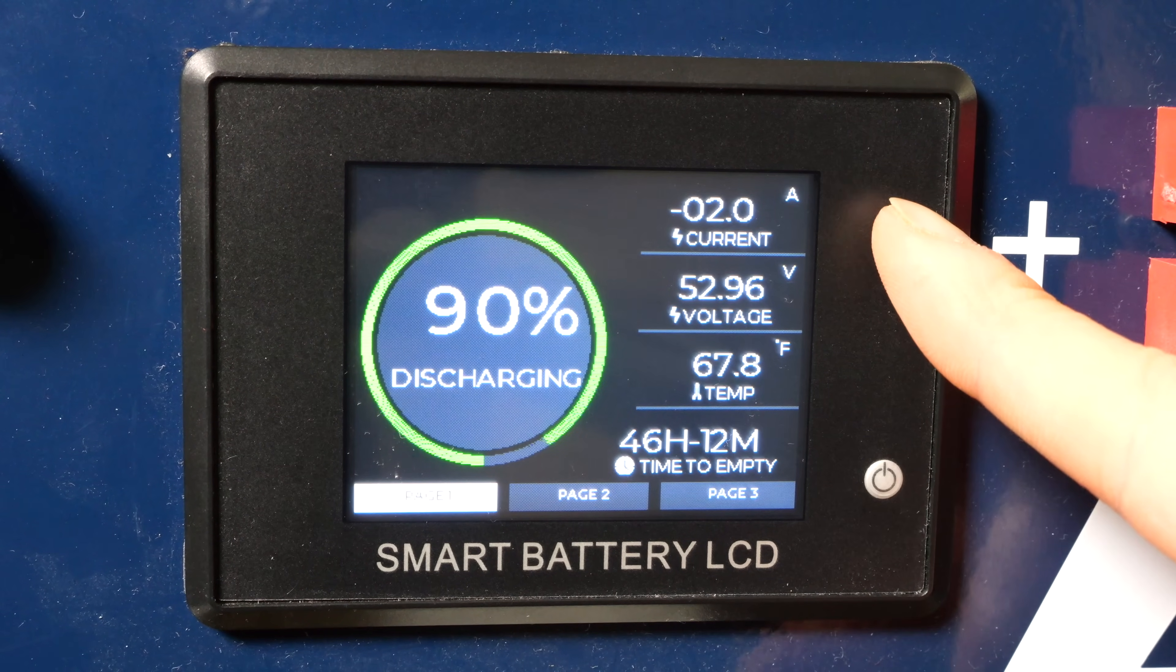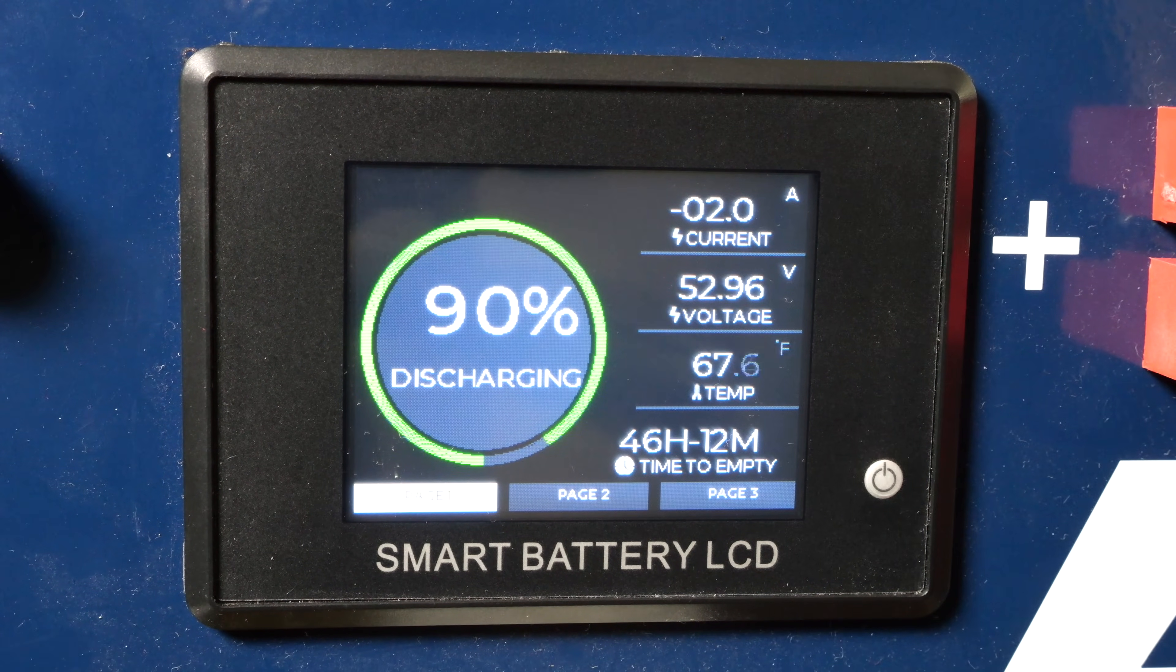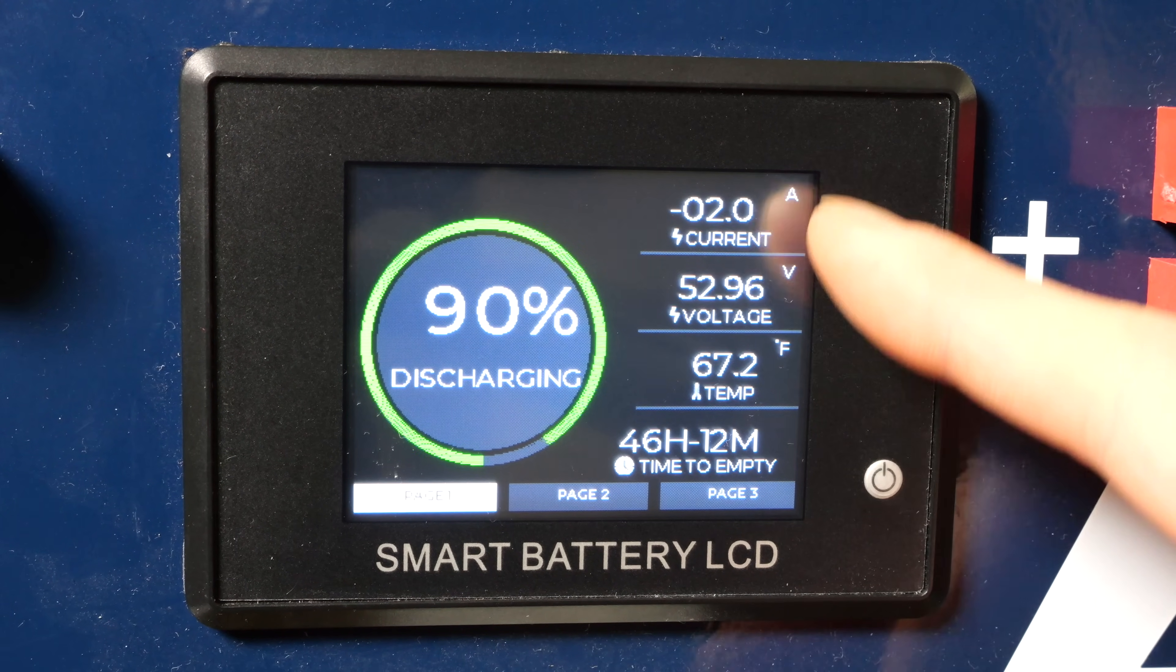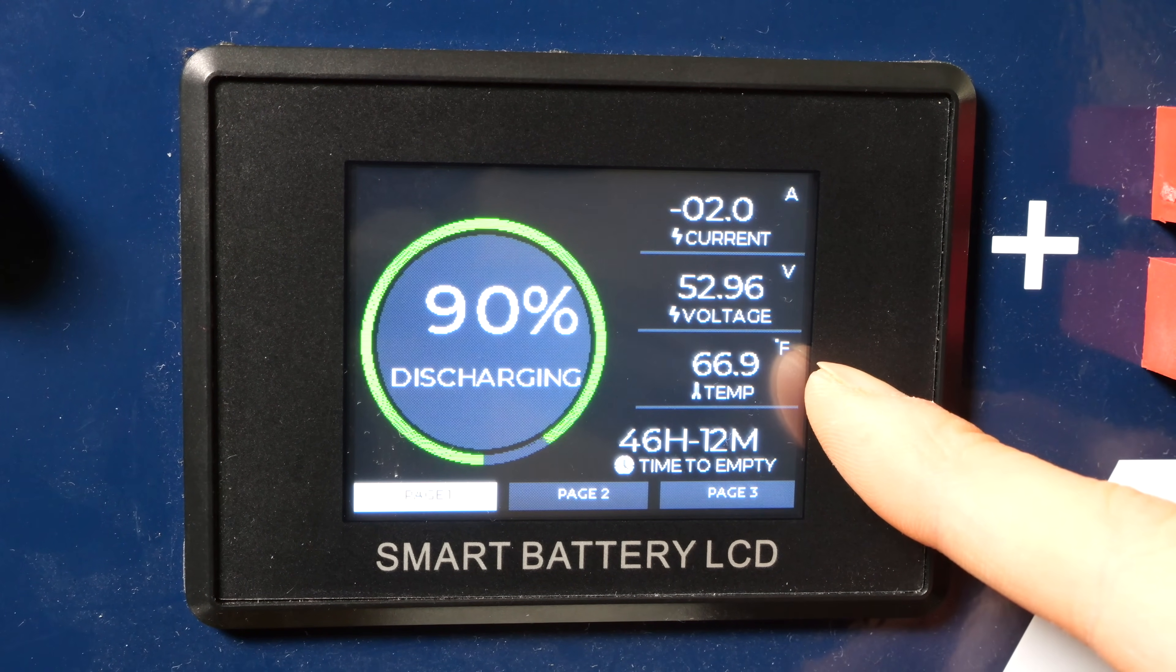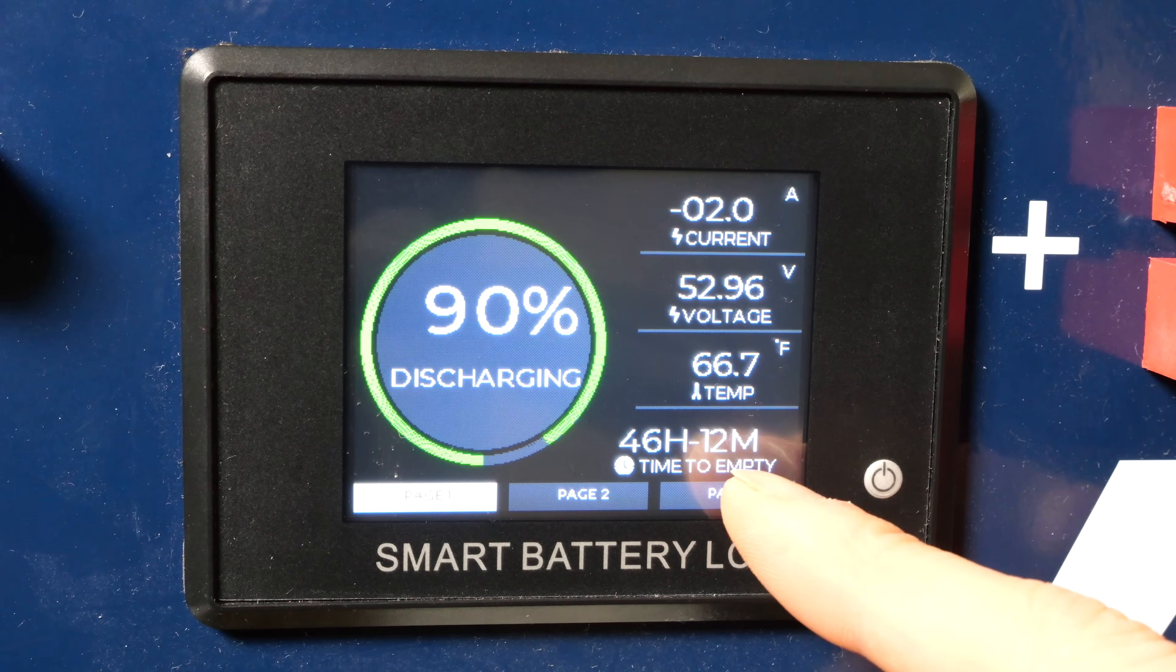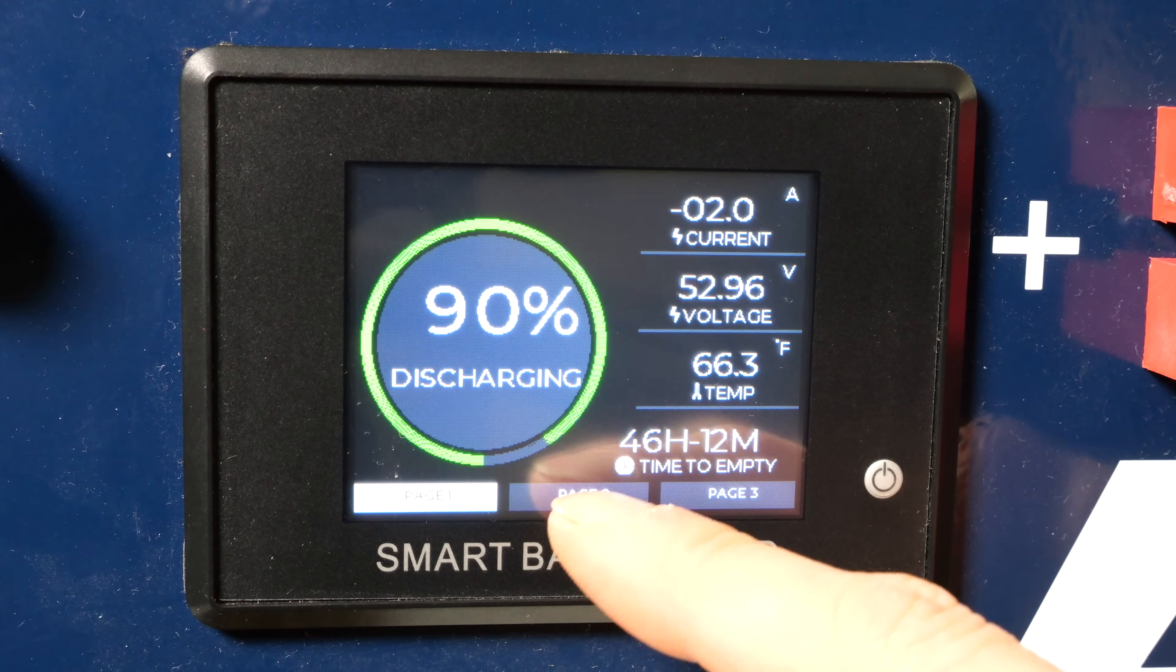I have the light drawing 40 watts and the inverter draws about 50 watts when the inverter is on. So it's about 100 watts. This thing is 52 times 2 amps. That's 100 watts. The temperature 66.9. It dropped back down. Time to empty 46 hours. 90% full and you've got page two.